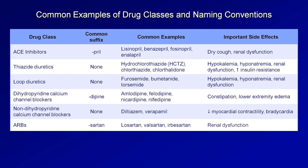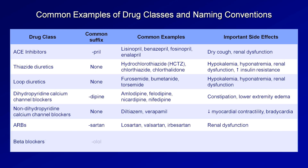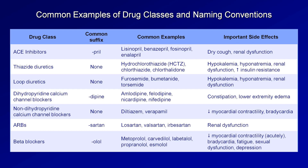Beta blockers end in -olol, such as metoprolol, carvedilol, labetalol, propranolol, and esmolol. In an acute time frame they can lower myocardial contractility, even if they can improve it in the long term. Other side effects include bradycardia, fatigue, sexual dysfunction, and depression. In my personal experience, beta blockers are the antihypertensive drug class that, when used in relatively healthy people for treatment of hypertension, have the greatest risk of some side effect developing.